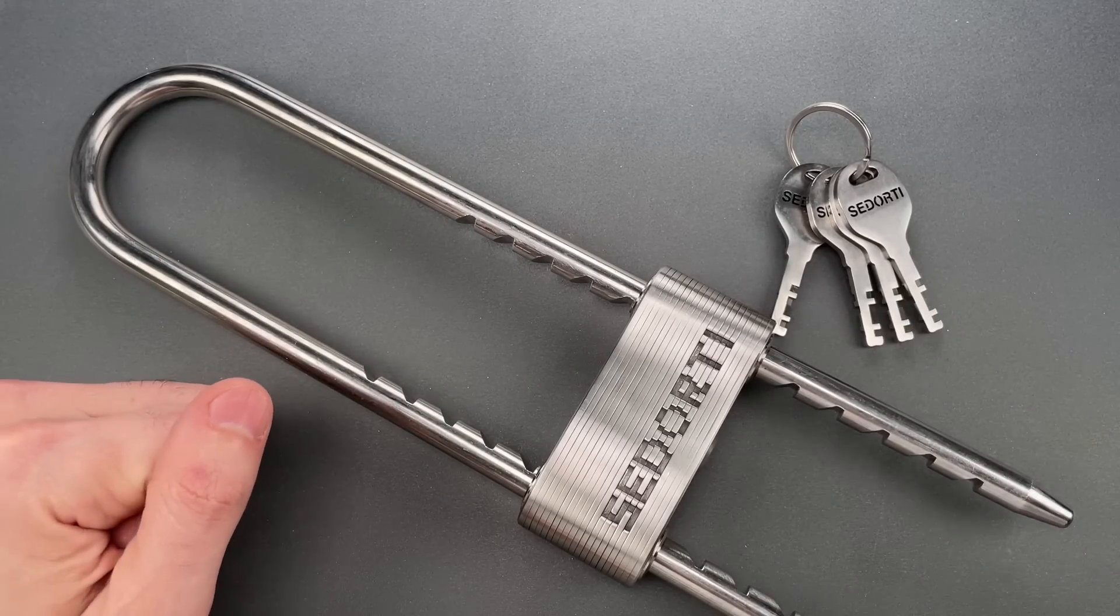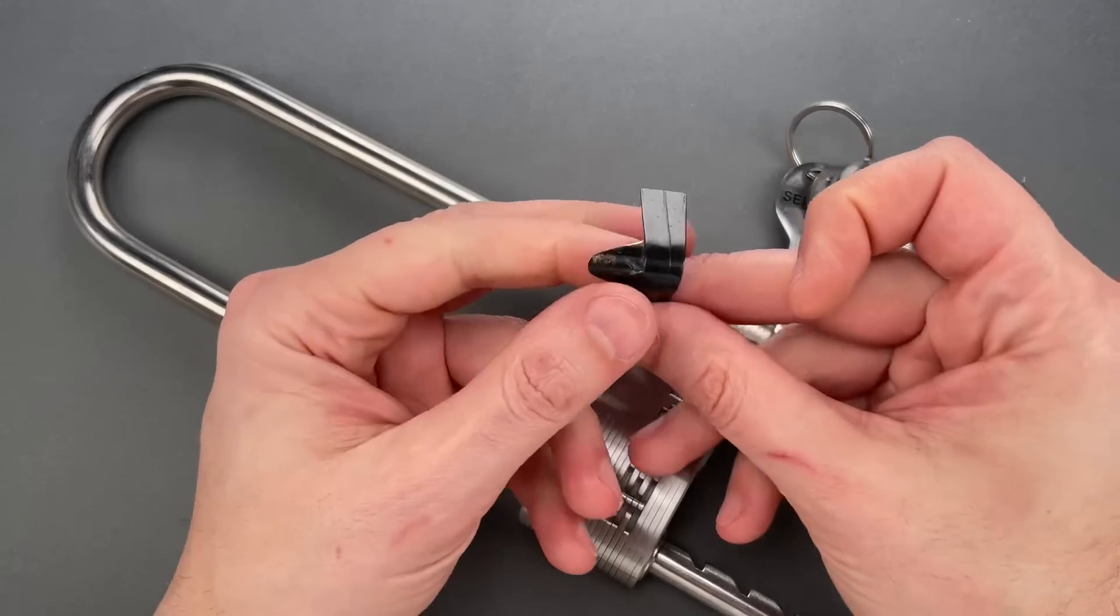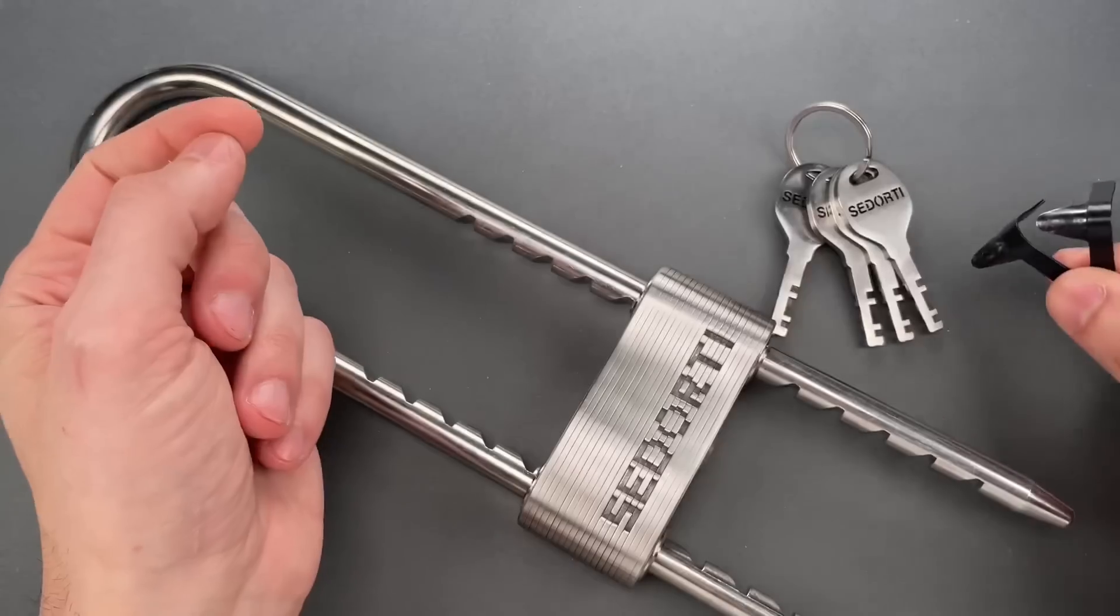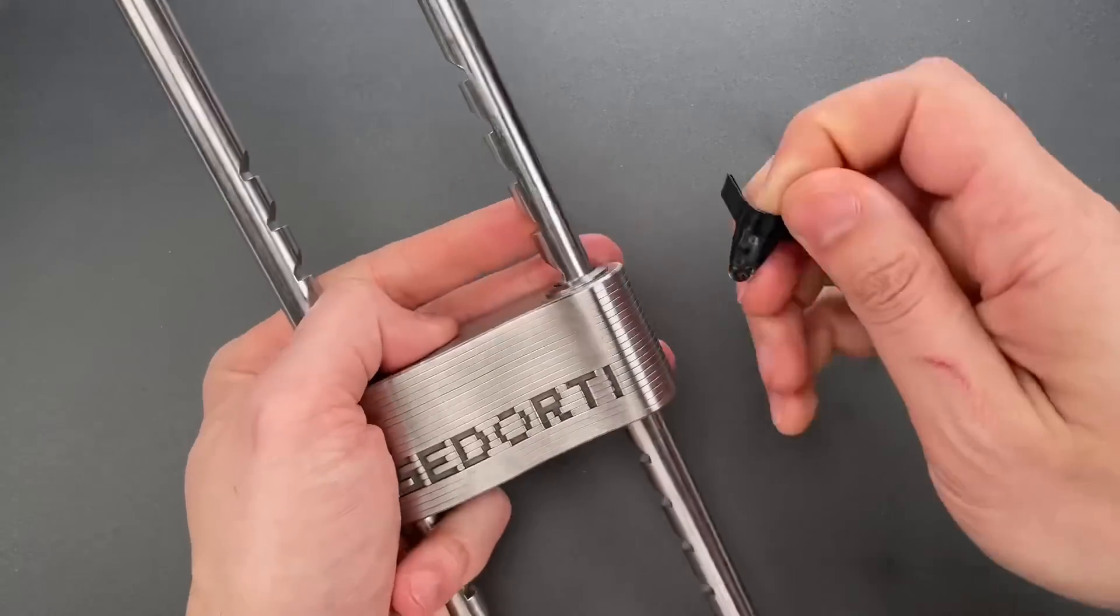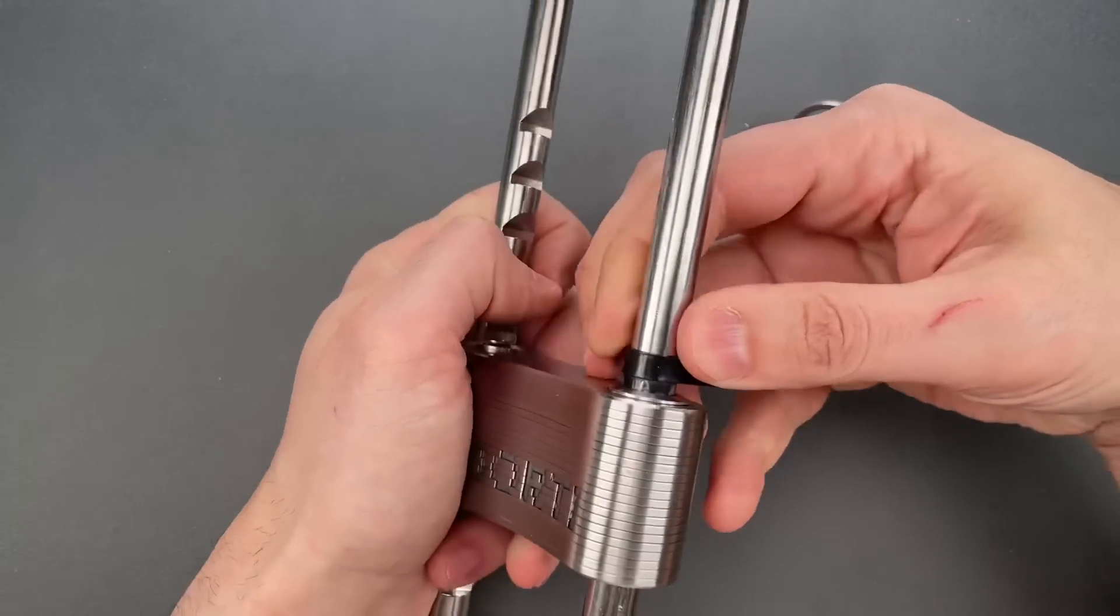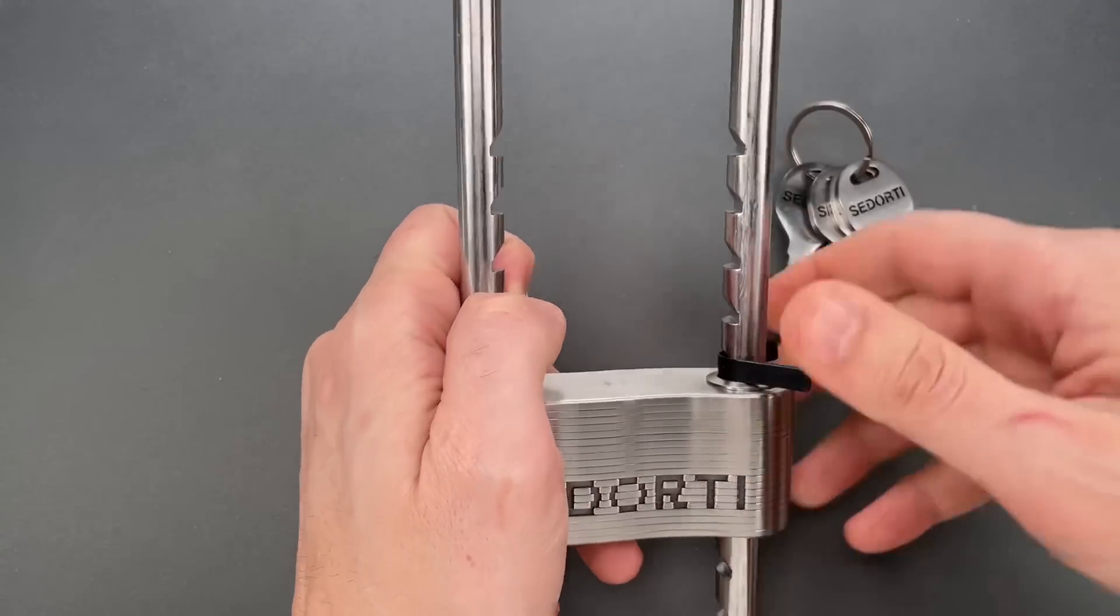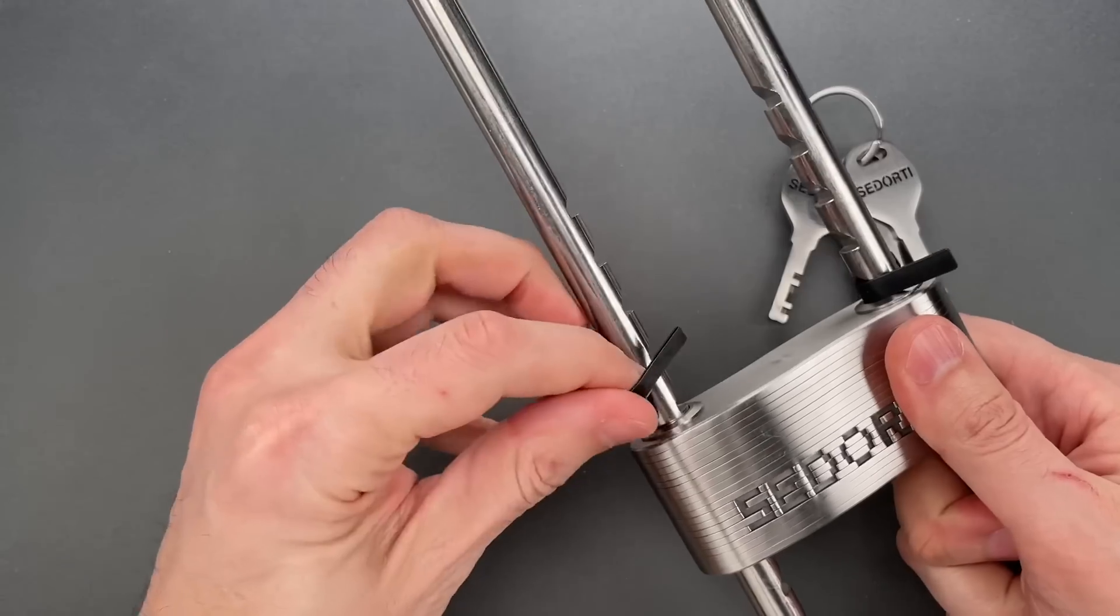The first issue is shimming and I can demonstrate using the largest of the Covert Instruments padlock shims. We're going to slip these in between the lock body and the shackle and then try to open it up.